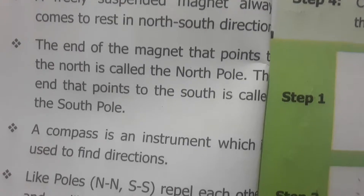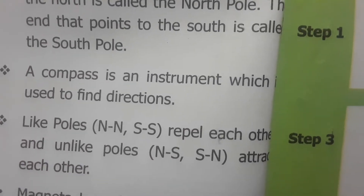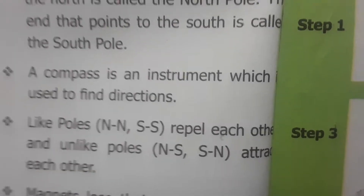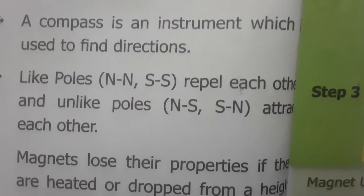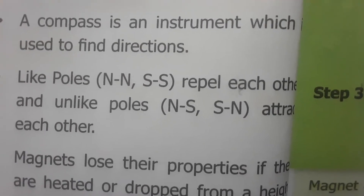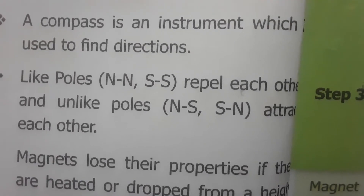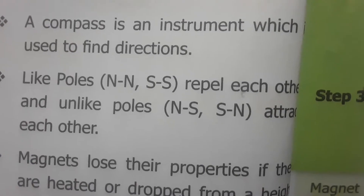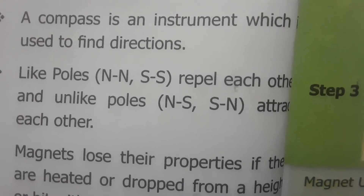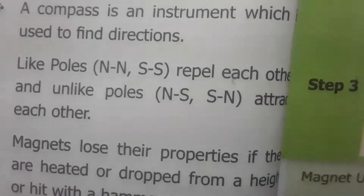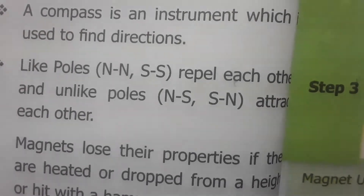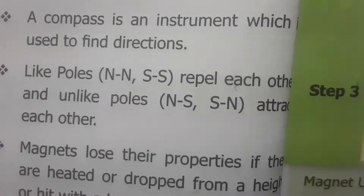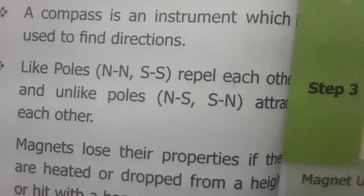A compass is an instrument used to find directions. Like poles — that is, the north pole of one magnet and the north pole of another magnet — repel each other. Unlike poles, that is opposite poles, the north pole of one magnet and the south pole of another magnet, attract each other.